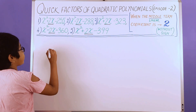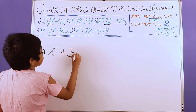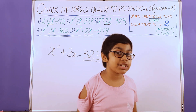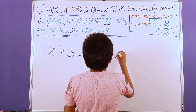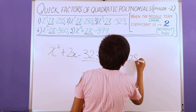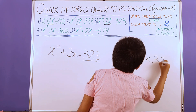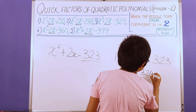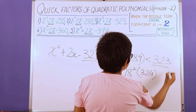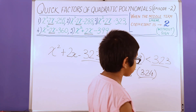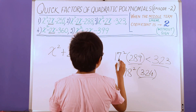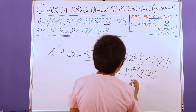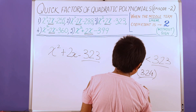We move on to our third polynomial: x squared plus 2x minus 323. We need to look at 323 between two consecutive perfect square numbers: 17 squared is 289, less than 323, less than 18 squared, which is 324. We have 323 between 289 and 324. We add 2 to the smaller number, giving us the pair 17 and 19, and we subtract 2 from 18, giving us the pair 16 and 18.